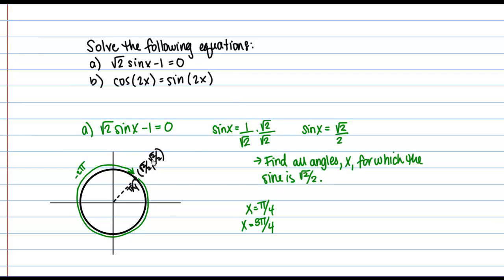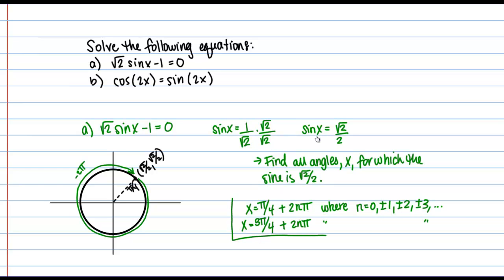So how do I actually write this? I can write pi over 4 plus 2n pi, where n is an integer — that is 0, plus or minus 1, plus or minus 2, and so on. So pi over 4 plus any integer multiple of 2 pi, whether that integer is positive or negative, is also going to be a solution. And the same thing with 3 pi over 4. This gets me all the solutions to my equation, and we see that there are actually infinitely many of them.